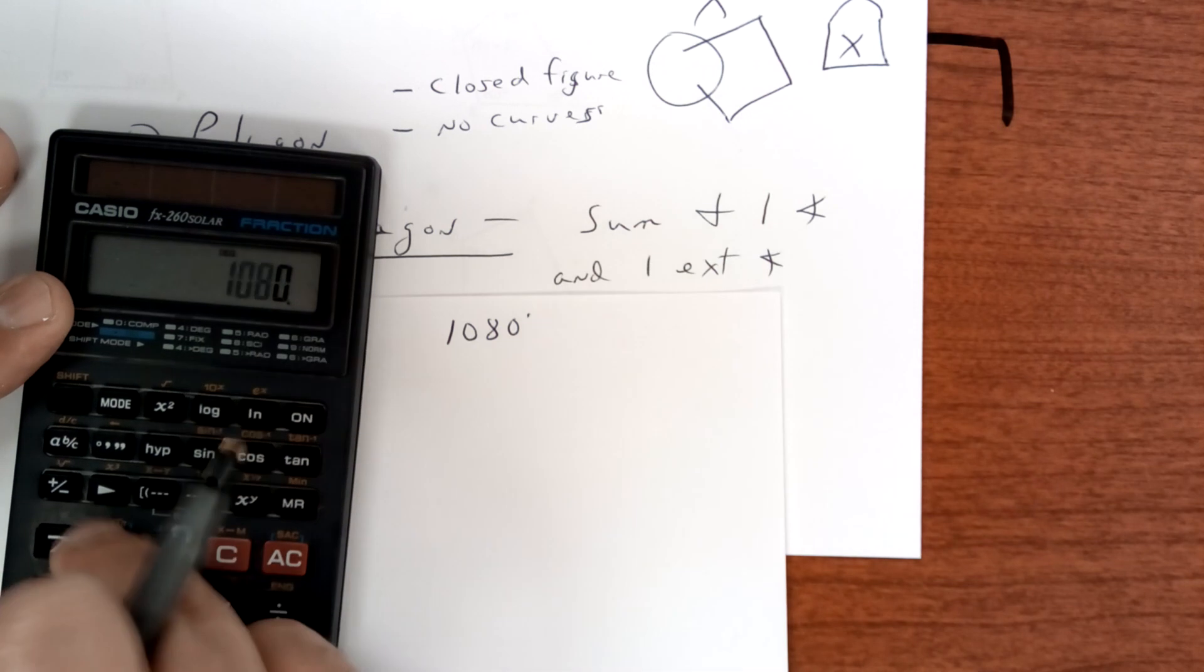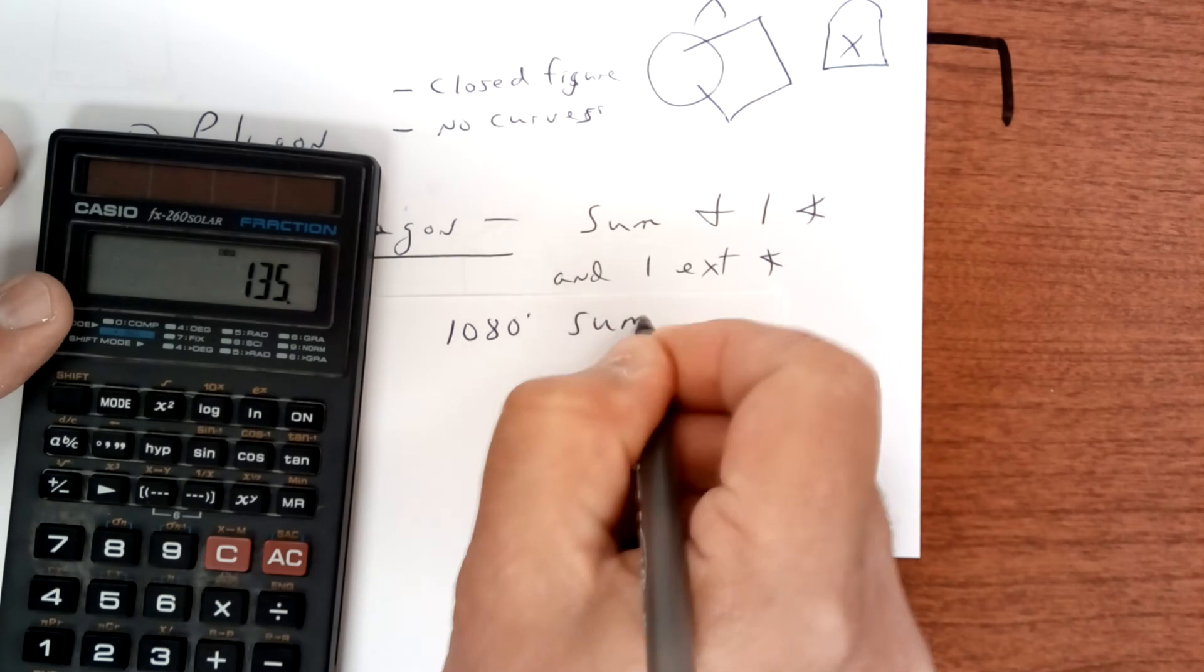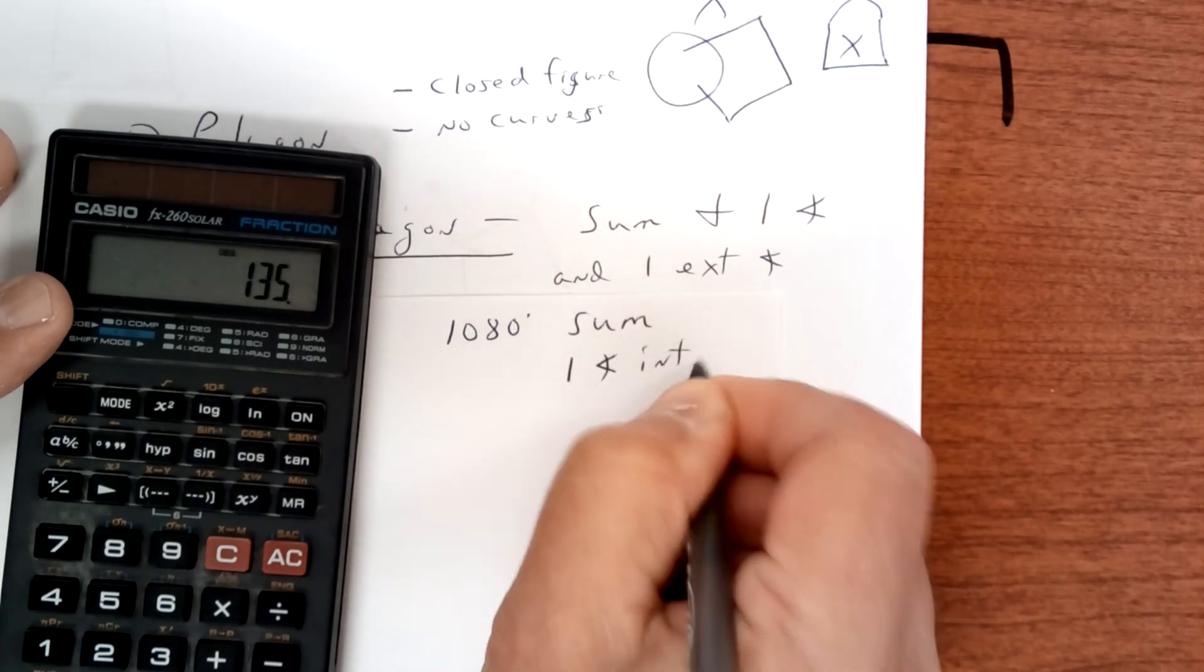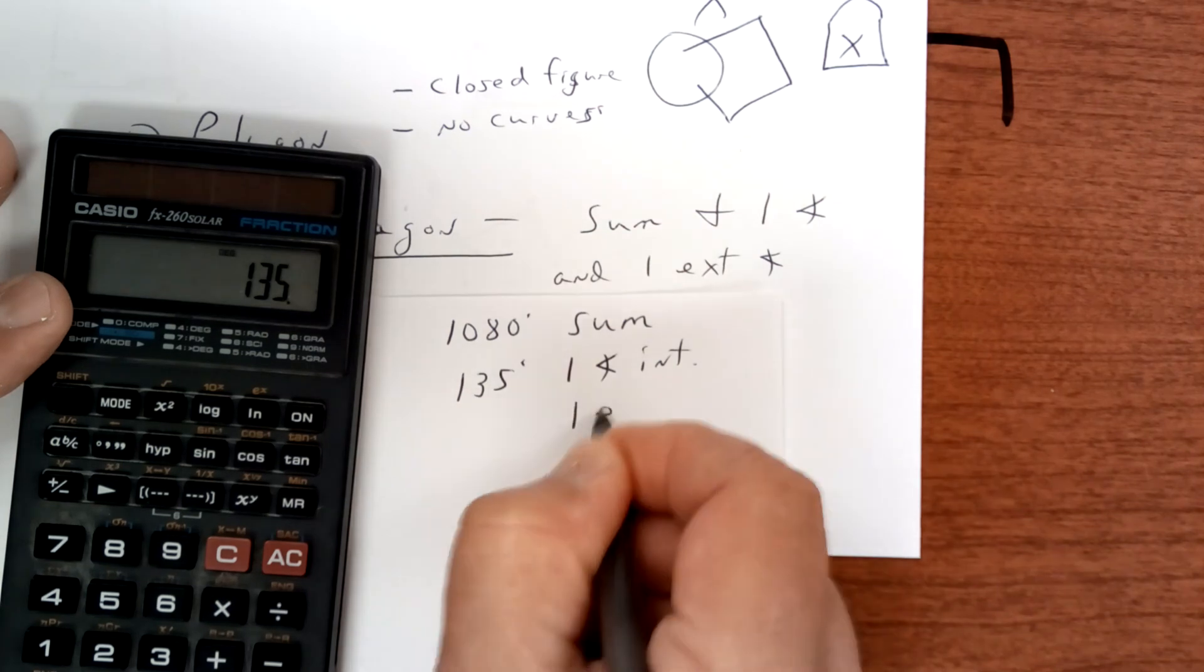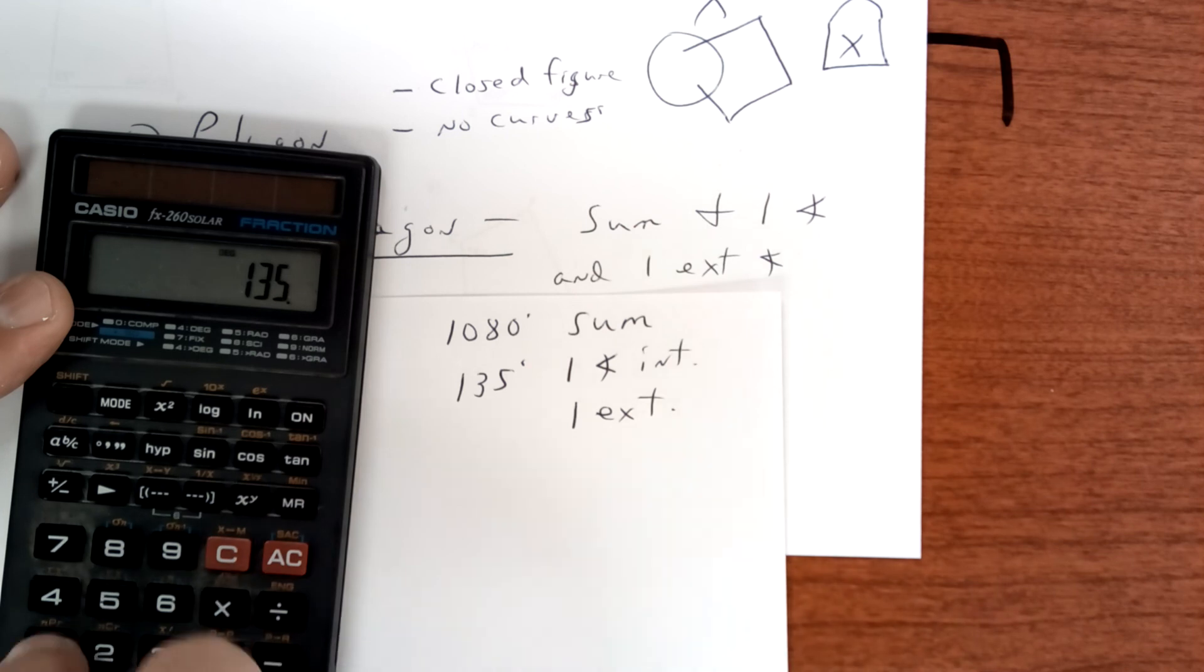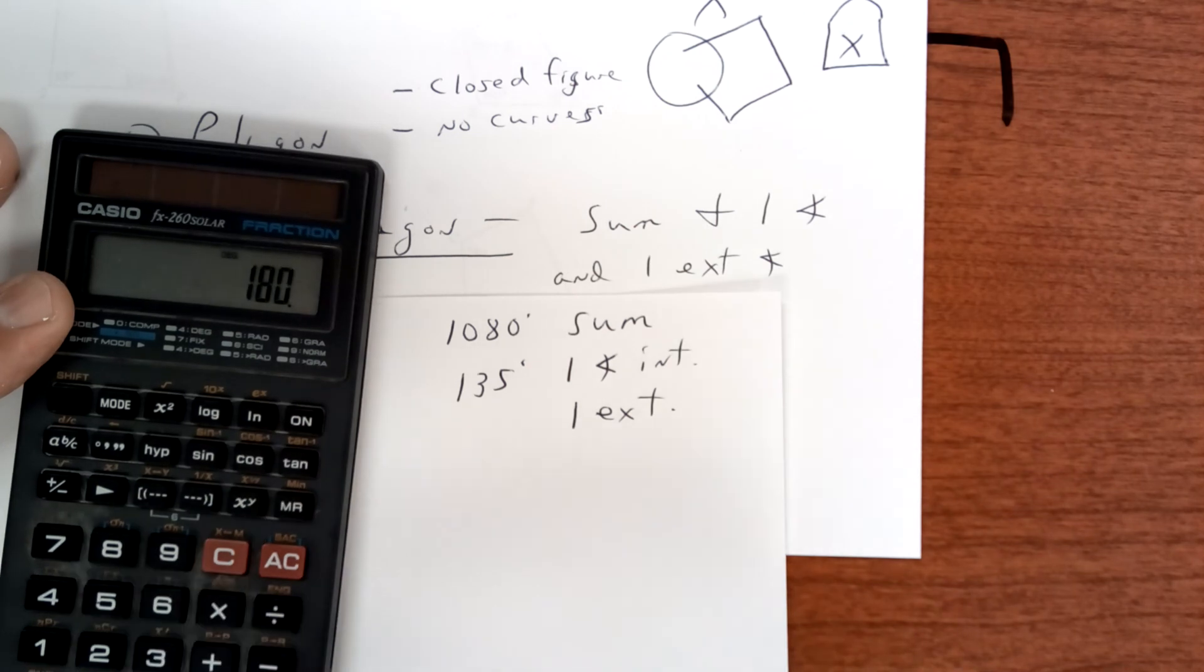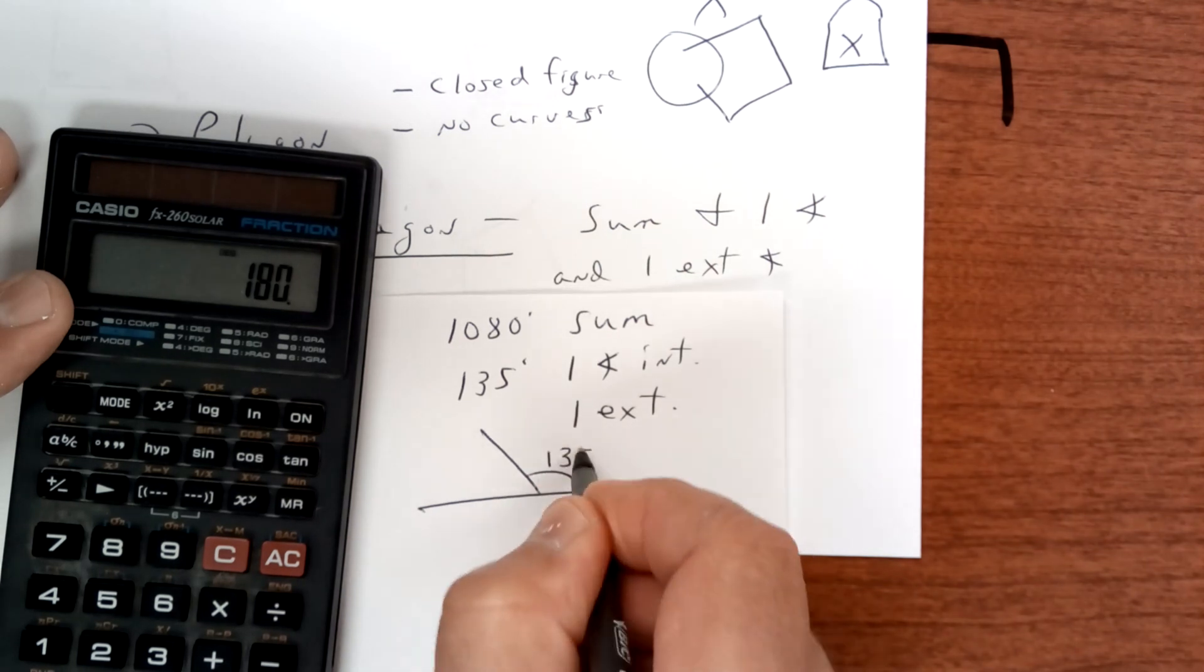So 1080 divided by eight equals - so one angle - this is the sum, but one interior angle is 135 degrees. And to get one exterior angle, you subtract from 180.